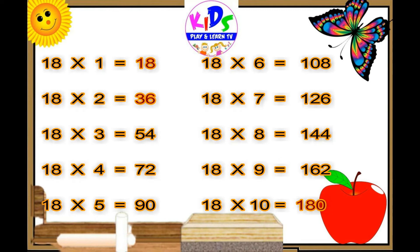18 sevens are 126. 18 eights are 144. 18 nines are 162. 18 tens are 180.